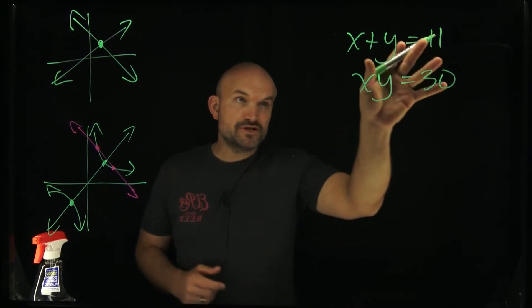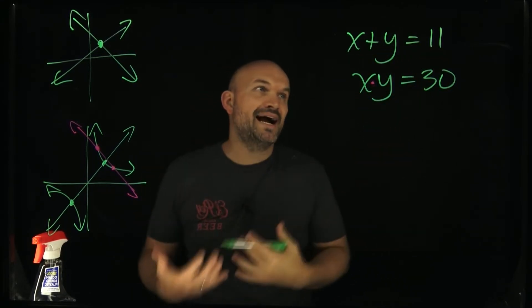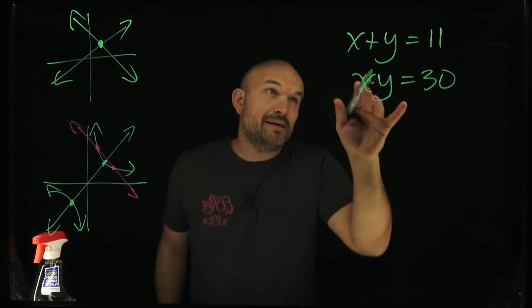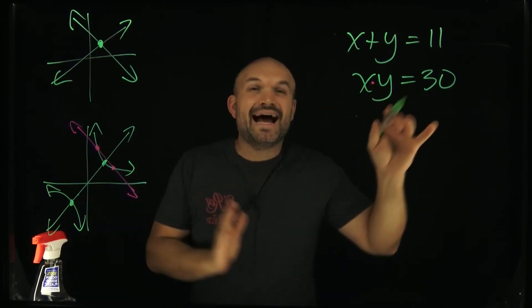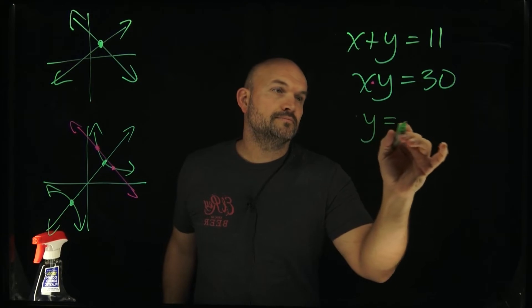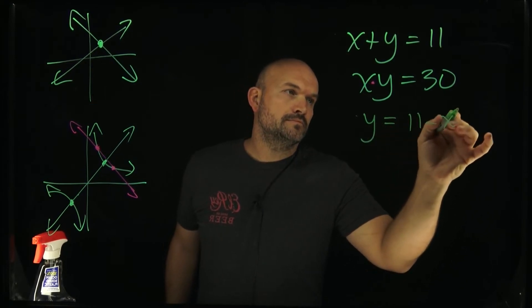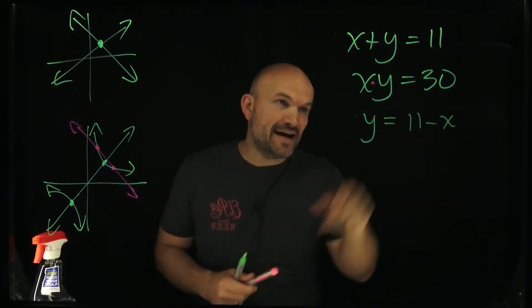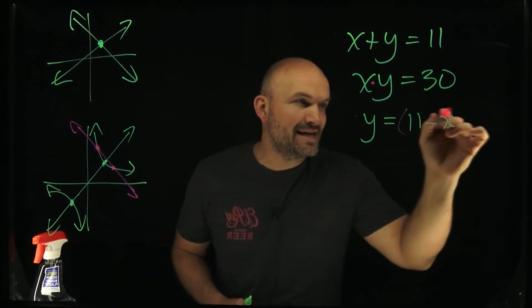I'm going to take my first equation and solve for x or for y. It doesn't really matter. So in this example, I'm just going to solve for y by subtracting an x on both sides. Okay, now what I've done is I've identified that y is equal to 11 minus x.